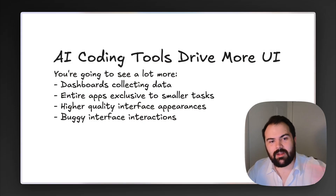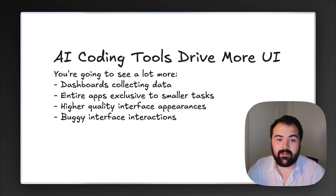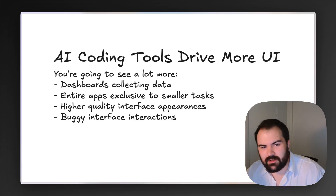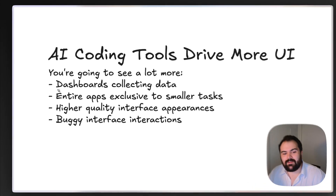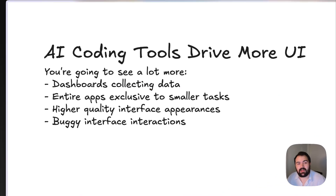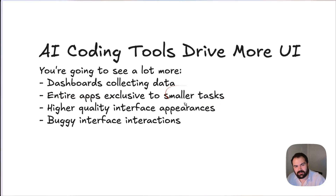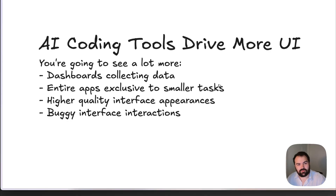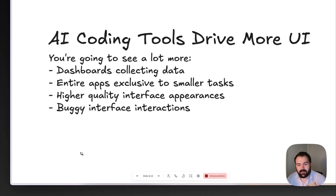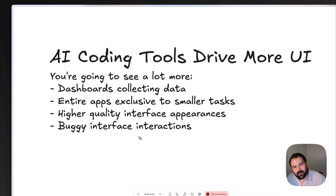First off, there's a plethora of new AI coding tools that are really driving a lot more UI. These tools include Bolt.new, V0, Lovable, and Replit. All these tools allow UI to be created faster than ever before. As a consequence, you're going to be seeing a lot more dashboards aggregating or collecting data, and entire apps built for even really small tasks. Overall, we're going to see higher quality interfaces because these tools streamline us toward common, well-understood UI libraries — but that comes with a consequence of buggy interface interactions.